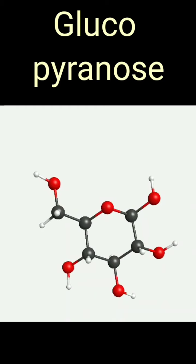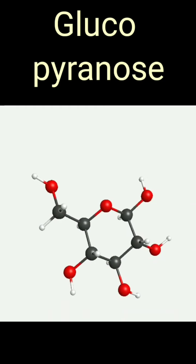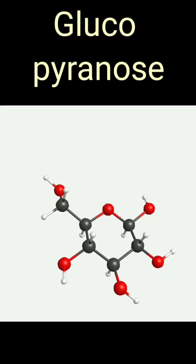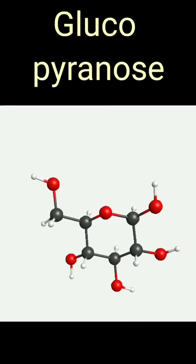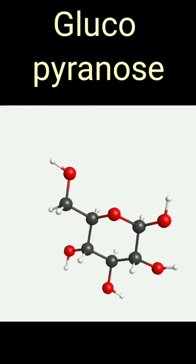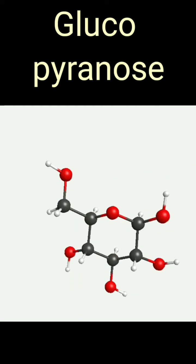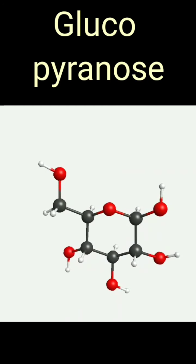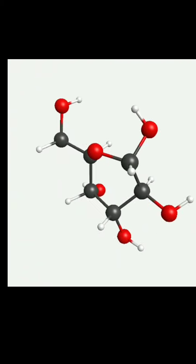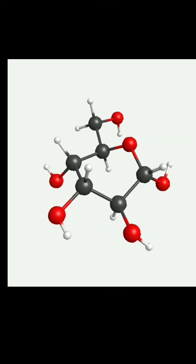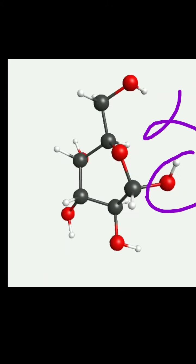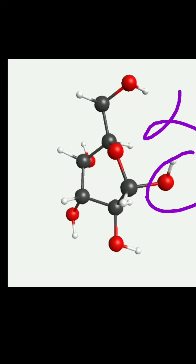Carbon number 1 का chiral carbon newly constructed है जो hemiacetal bond formation के कारण बना है। इसमें OH और H की दो possibilities हैं — OH right side पे भी हो सकता है, OH left side पे भी हो सकता है। जब OH right side पे होता है तो उसे हम alpha कहते हैं और इस chain में उसे नीचे की side दिखाते हैं। जब वो beta होता है यानि left side पे होता है, तो हम उसे upper side पे दिखाते हैं और उसे beta glucopyranose कहते हैं। Here, OH is on the right side and we call it alpha glucopyranose.